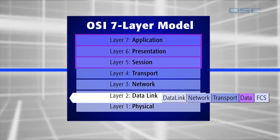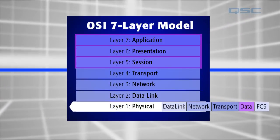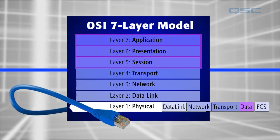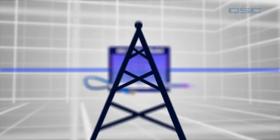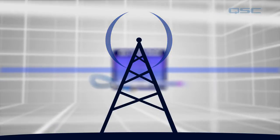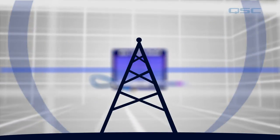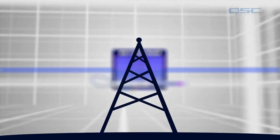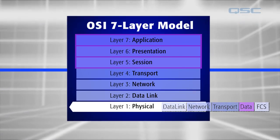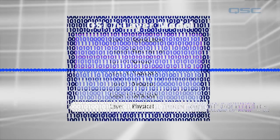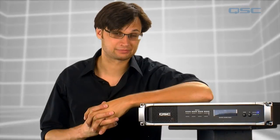Finally, Layer 1 is the physical layer. These are the actual wires and cabling that connect devices together, and this includes things you might not consider to be physical, such as wireless signals. But if it carries a signal through the world, it operates on this layer. This is the point where your data and all of the information that's been added to it along the way is broken down into ones and zeros. So let's take a quick break right here, and feel free to move on to the next section whenever you're ready.